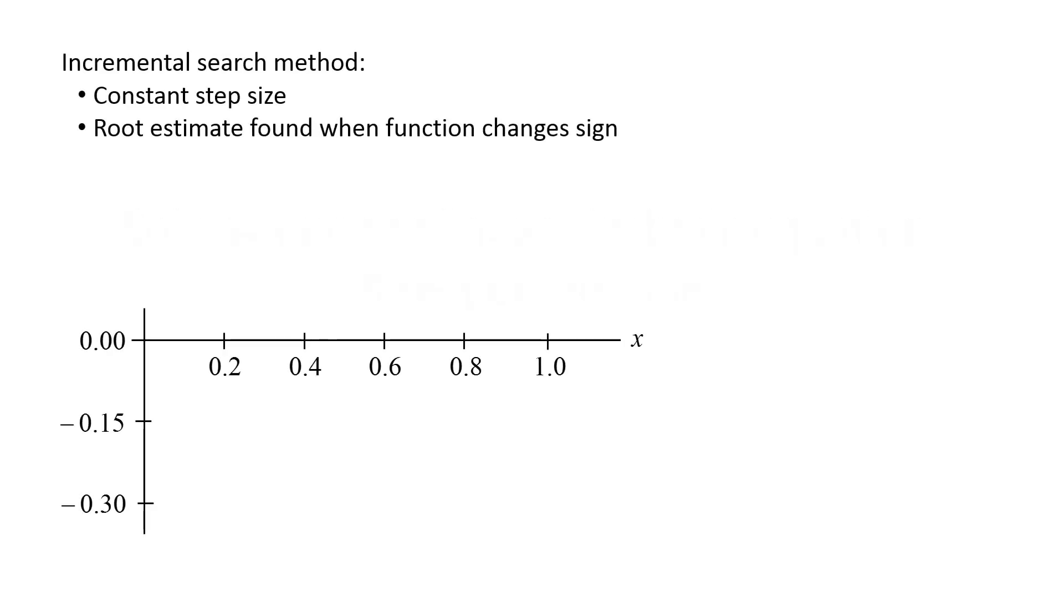In a previous lesson, we discussed how the incremental search method can be used to find a root. For example, if we want to find the root of x cubed minus 0.3, we can increase x using a constant step size until the function changes sign. When this occurs, we have bracketed the root between two values.